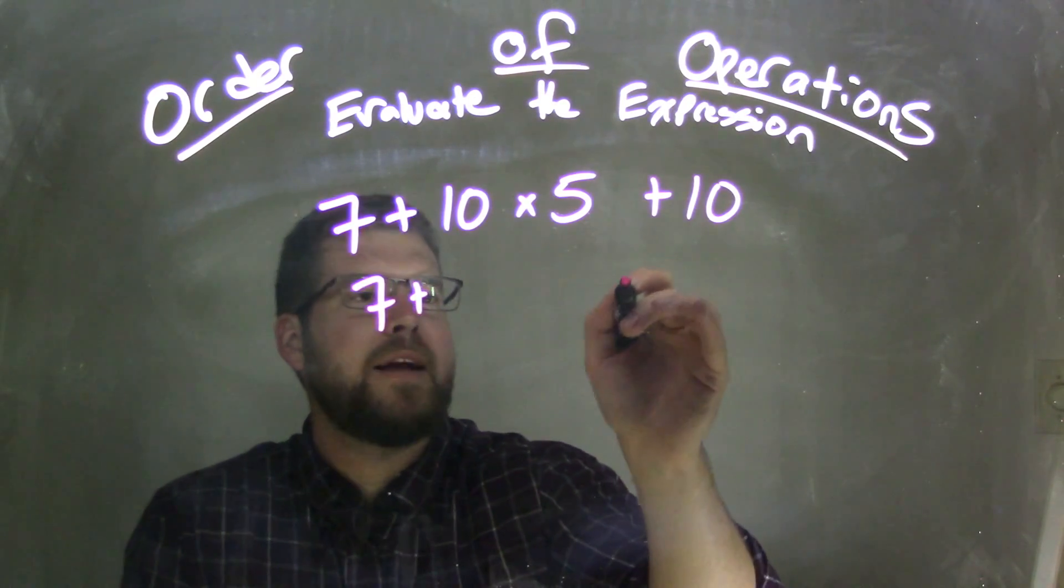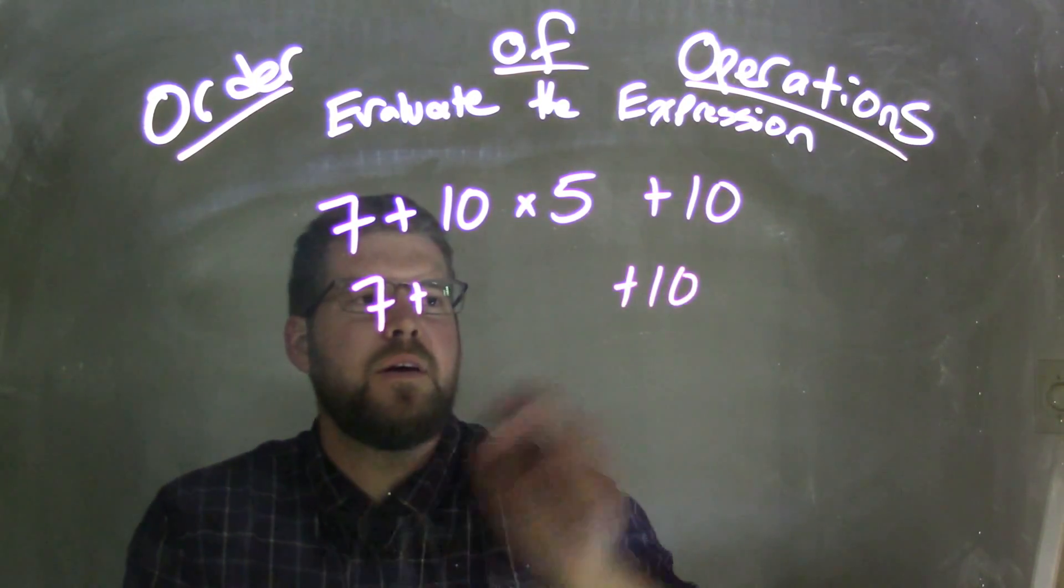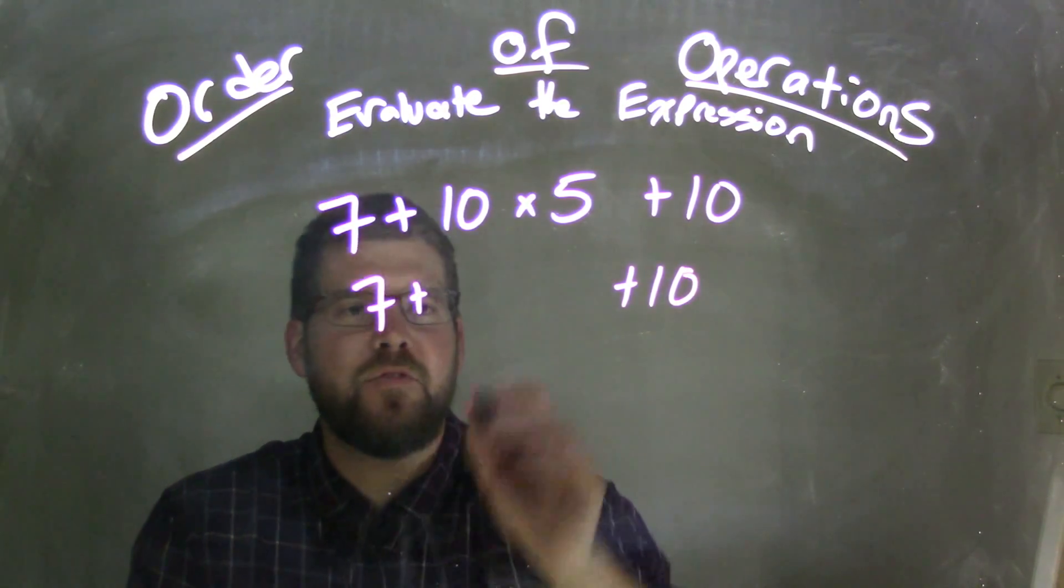So you bring down the 7 plus, bring down the 10 plus, and we're left with the inside, 10 times 5, which is 50.